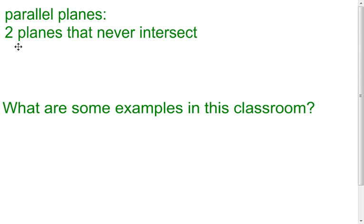Parallel planes are planes that never intersect. An example would be the floor and the ceiling, or the front wall and the back wall of the classroom. And that's going to be the end of the lesson dealing with transversals and the angles that the transversal creates, along with parallel and skew lines.